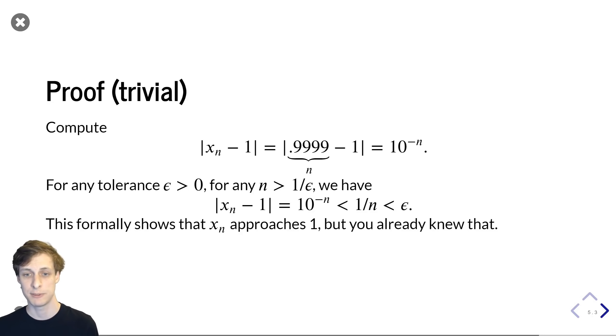Okay, so let's just look at the difference. xn minus 1, in absolute value. Plug in the expression for xn, and you see that that difference is 10 to the minus n, or 1 over 10 to the n if you prefer. I think a lot of people would be comfortable stopping there and saying, okay, yeah, I see that this goes to 0.